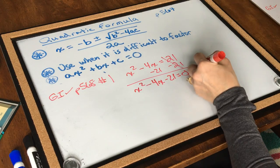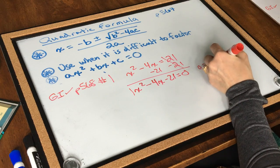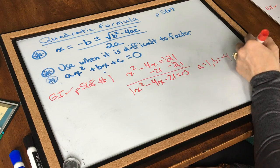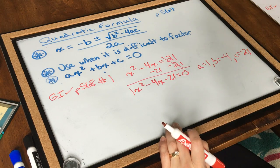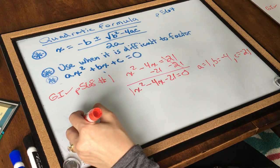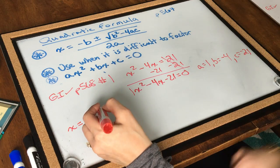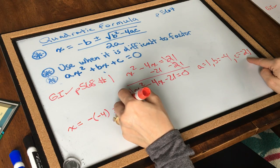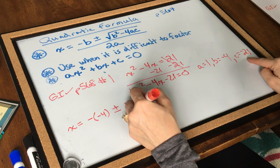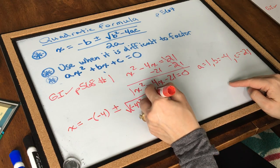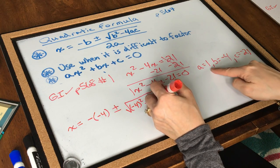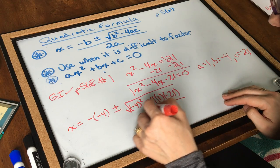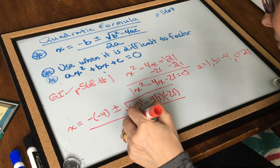My a is 1 for the 1x squared, my b is negative 4 from the middle term, and my c is negative 21. Let's start plugging in. Using the quadratic formula: x equals negative negative 4, plus or minus the square root of negative 4 squared, minus 4 times 1 times negative 21, all over 2 times 1.